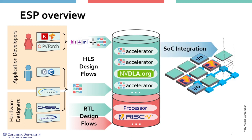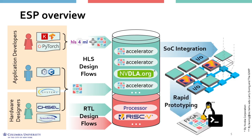The designer can then use the ESP graphical interface to specify the floor planning of a tiled SOC, choosing how many and which type of tiles to instantiate, as well as their location. Once the floor planning is specified, the flow for FPGA prototyping is push-button. ESP generates the RTL for the full system, which can then be deployed on FPGA where it can run Linux. The support for the new design flows, circled in red, is one of the contributions of this work.